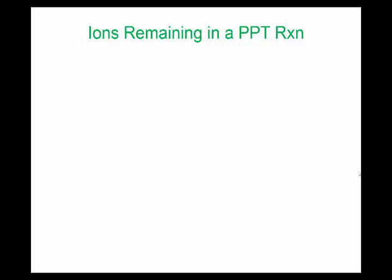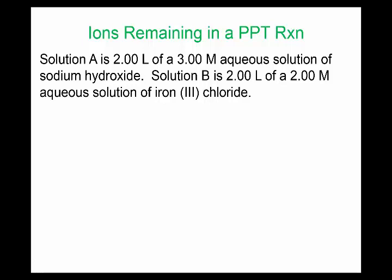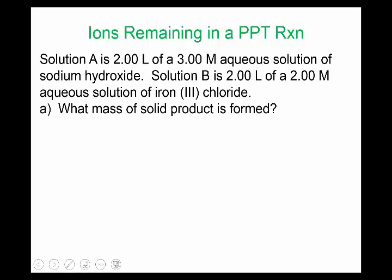This tutorial covers how to calculate ions remaining in a precipitation reaction. Solution A is two liters of three molar sodium hydroxide. Solution B is two liters of a two molar aqueous solution of iron(III) chloride. From solubility rules, iron hydroxide is one of the possible products and is known to be insoluble — it's a hydroxide, not a group one salt or ammonium, so it should be insoluble.